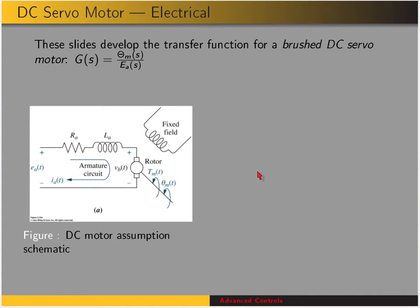The system we're going to examine in this video is a DC servo motor. We want to find the transfer function which relates the motor displacement to the applied voltage, and we're going to go through that process. This slide looks at the electrical properties of the system. Here is a schematic representing a DC motor, and it can be considered as a resistance in series with an inductance in series with a voltage source.